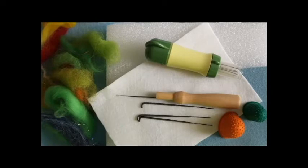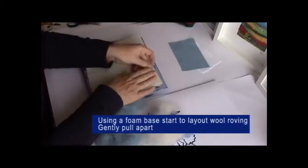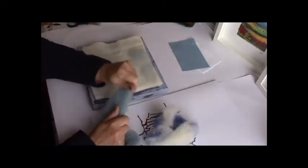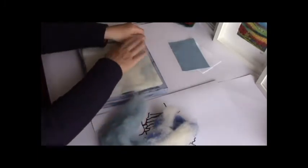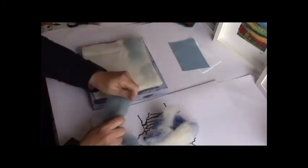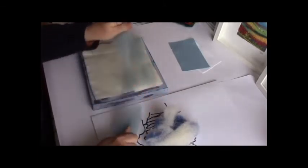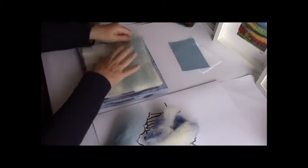Using the foam base start to lay out your wool roving. You do this by taking the roving and gently pulling it apart. Start with the sky and start with your blue. You can mix the shades of blue by overlapping them and giving a blend of colors like in watercolor painting.